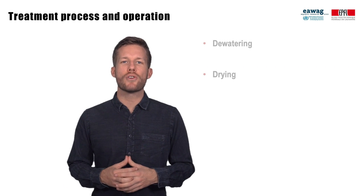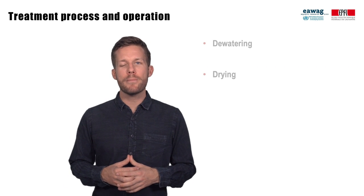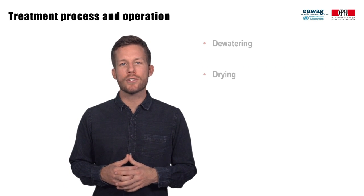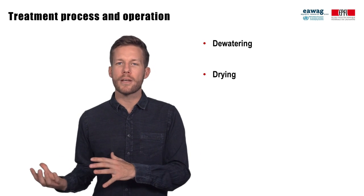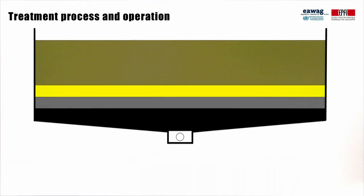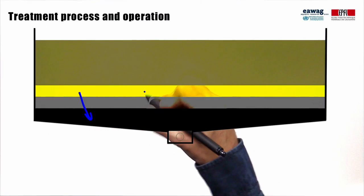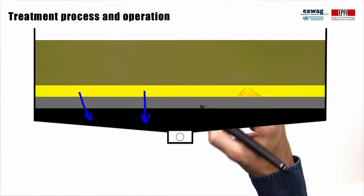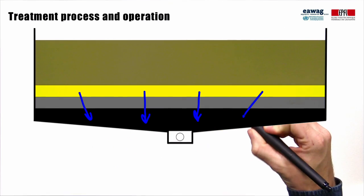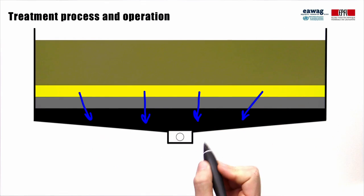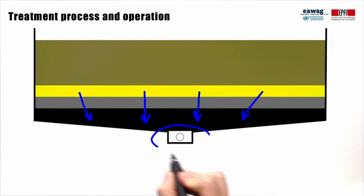The treatment process on drying beds can be separated into two stages: dewatering and drying. During dewatering, liquids and solids are separated by filtration. The free water in sludge percolates through the sand and gravel filter layers and is collected at the bottom with a drainage pipe for further treatment.